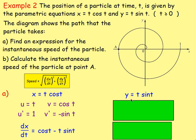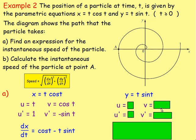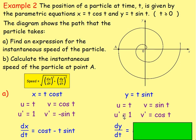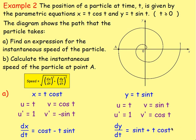For y = t·sin(t), we again use the product rule. Let u = t and v = sin(t), so u' = 1 and v' = cos(t). Therefore dy/dt = u'v + uv' = sin(t) + t·cos(t).